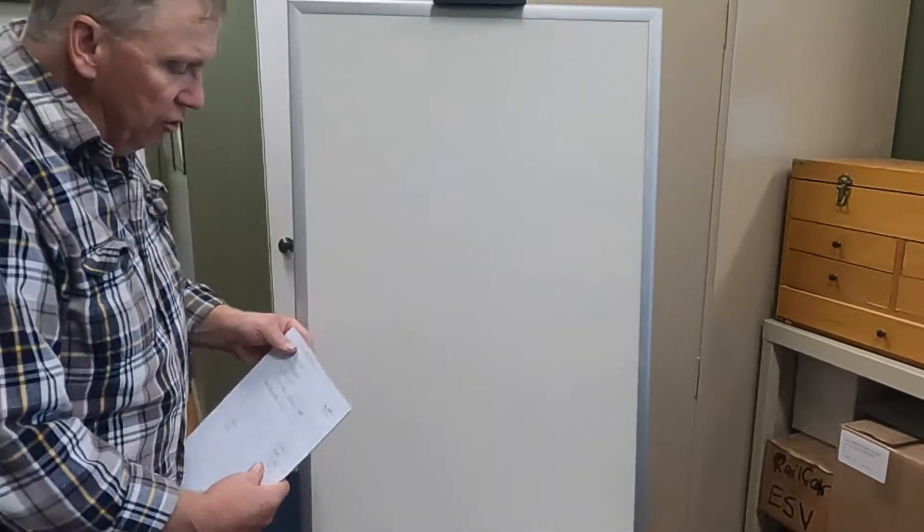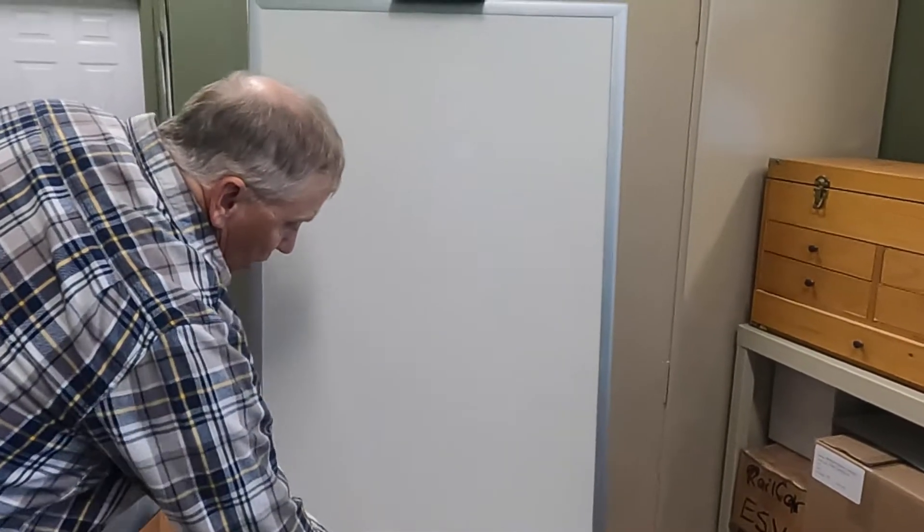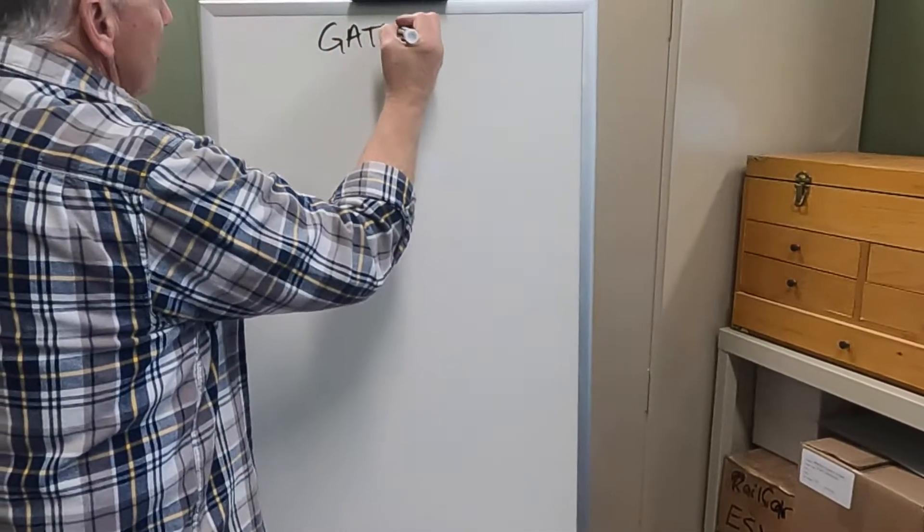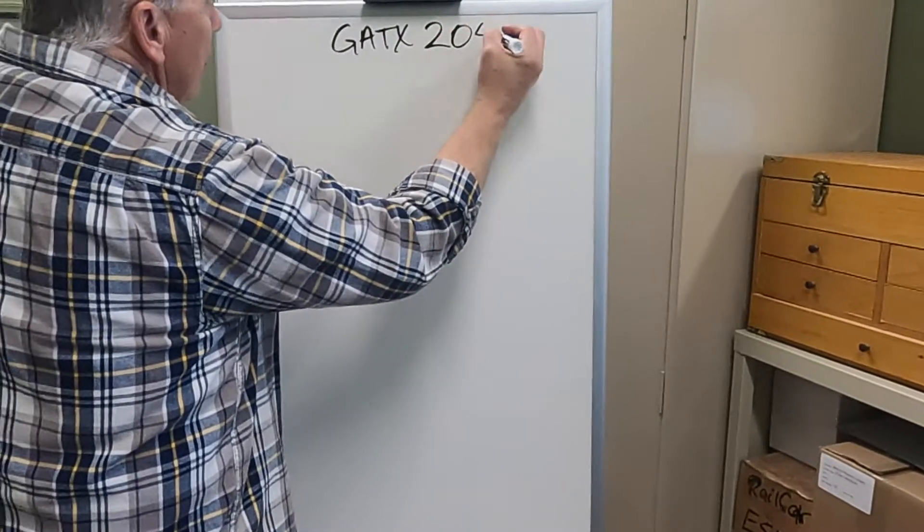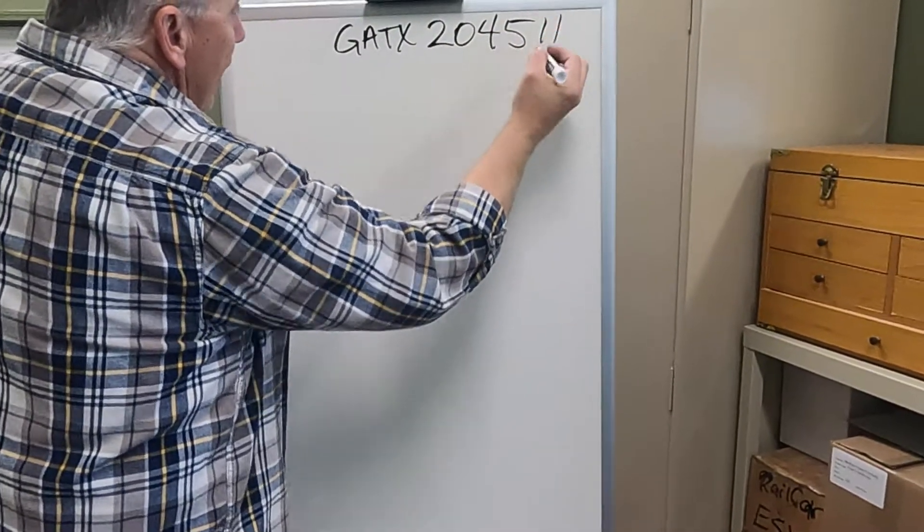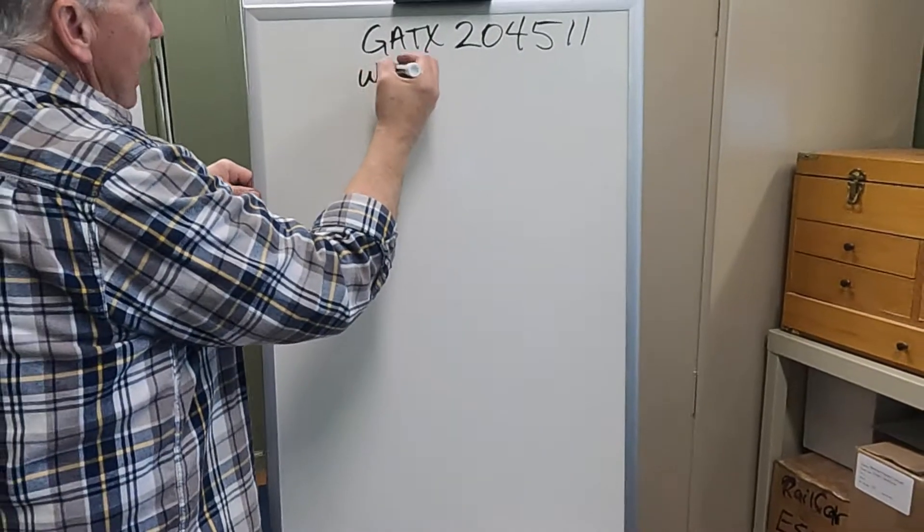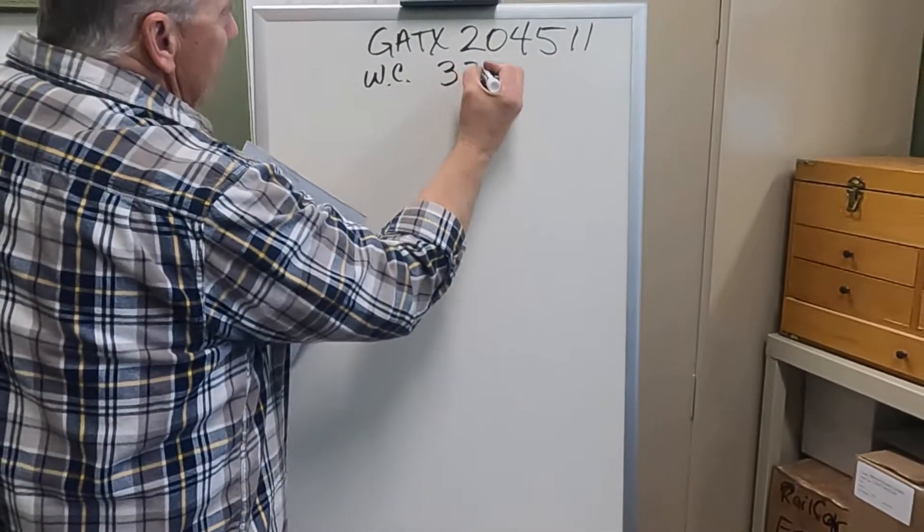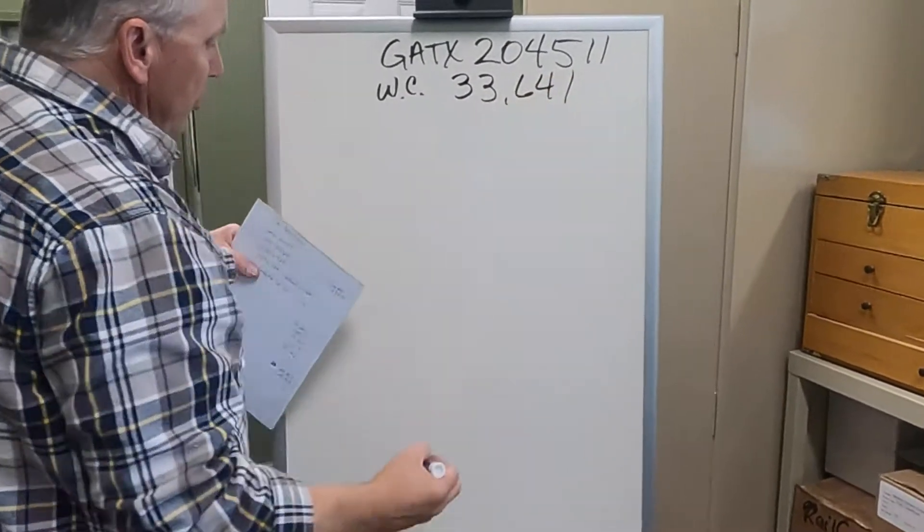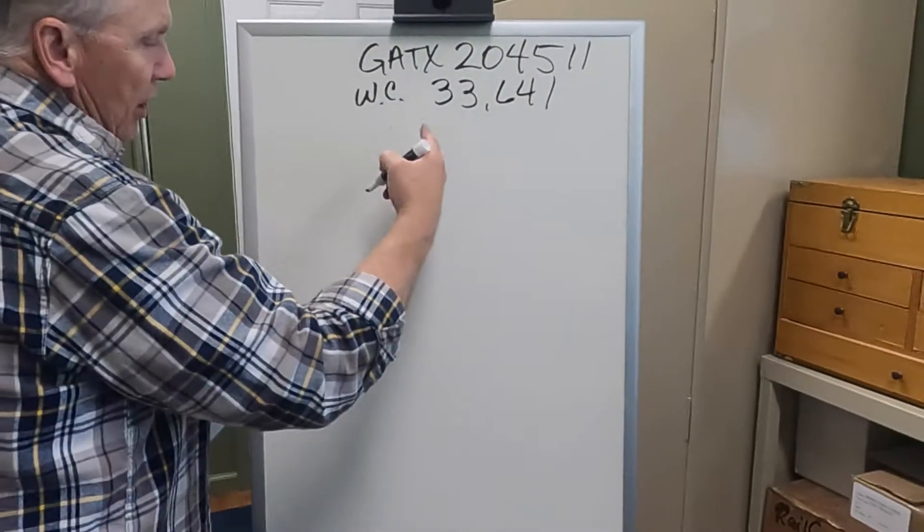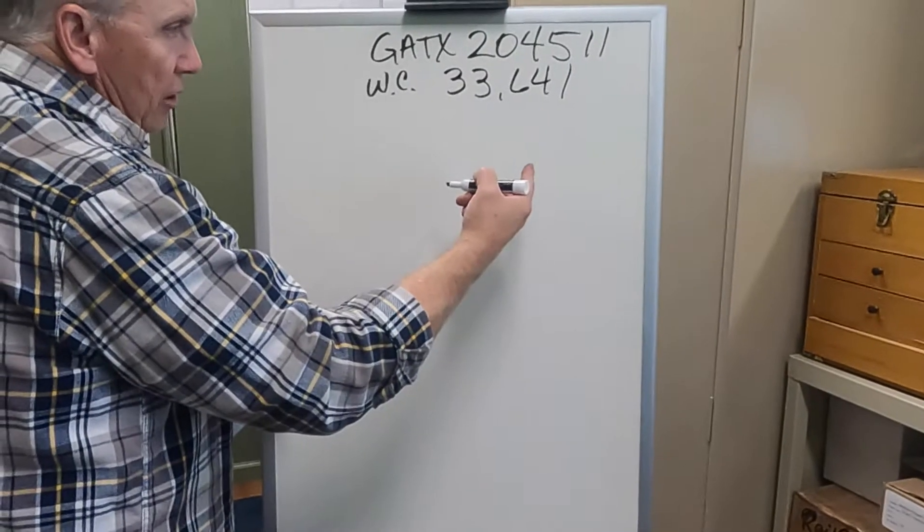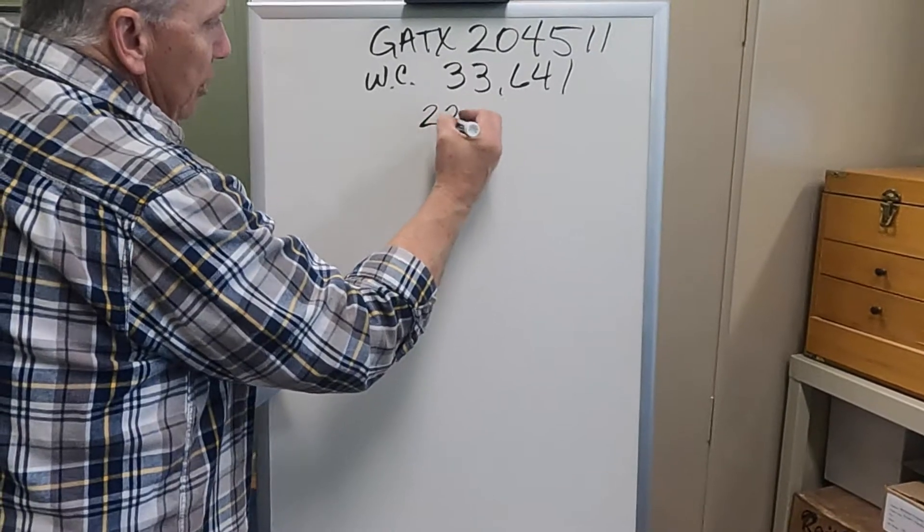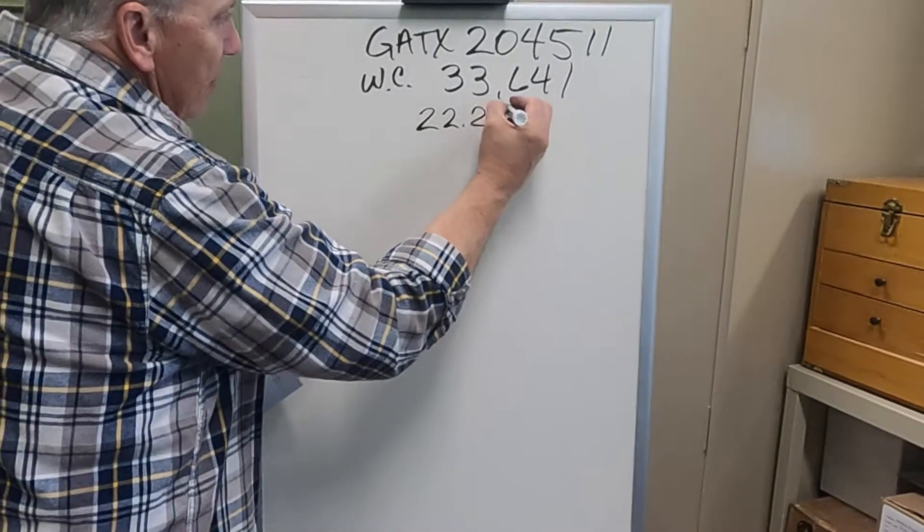We just want to do a basic verification. So we did car GATX 204511. We got off the side there, its water capacity was 33,641. We took an outage to measure how big the vapor space was in the car, and that came to 22.25 inches.